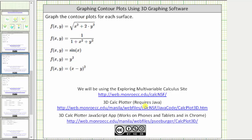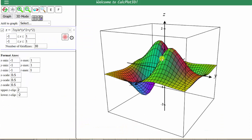Let's graph the first contour plot. When opening the app, this is always the default surface given by the function here on the left.